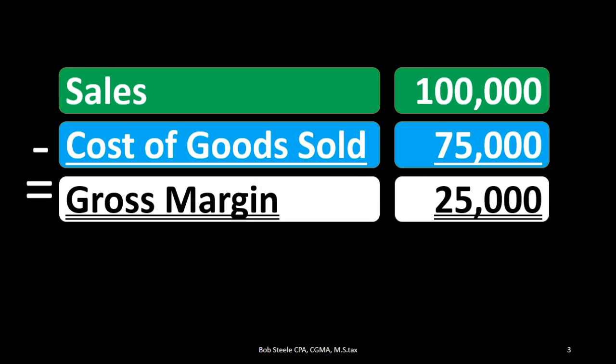Also called gross profit, $25,000. We're not yet down to net income — the bottom line of the income statement — but the gross margin or gross profit is a very important number in getting down to that bottom line. That's why it's often broken out in a multi-step income statement for a manufacturing company or a company with inventory, because that cost of goods sold relationship to sales is very important.